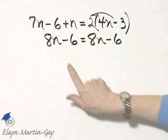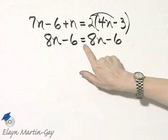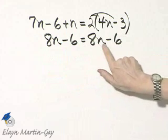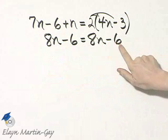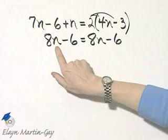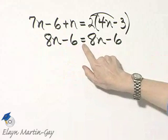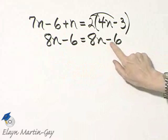For example, if n is 1, 8 times 1 minus 6, isn't that going to equal 8 times 1 minus 6? The answer is yes. No matter what value you let n become, 8 times that value minus 6 will always equal 8 times that same value minus 6.